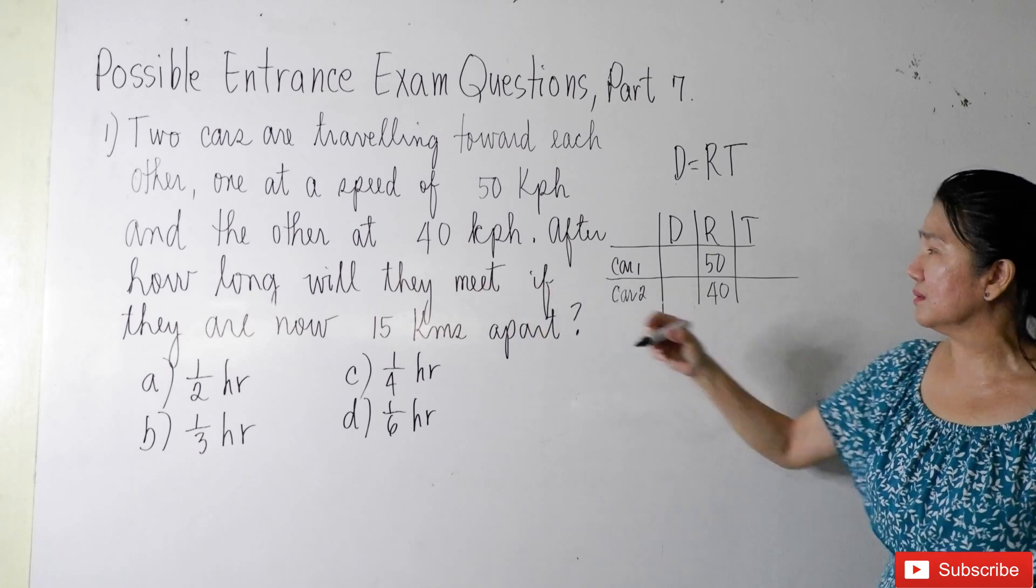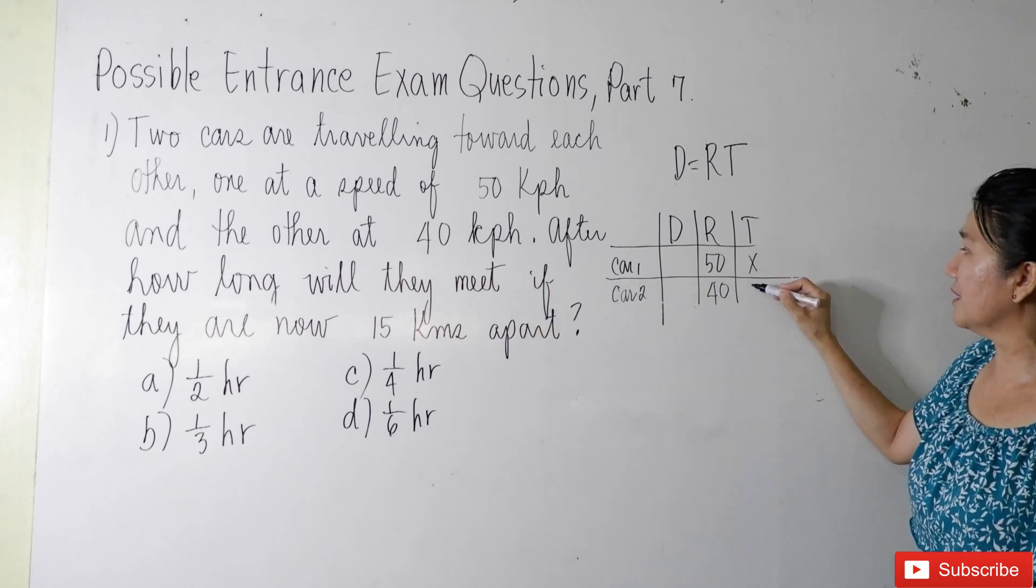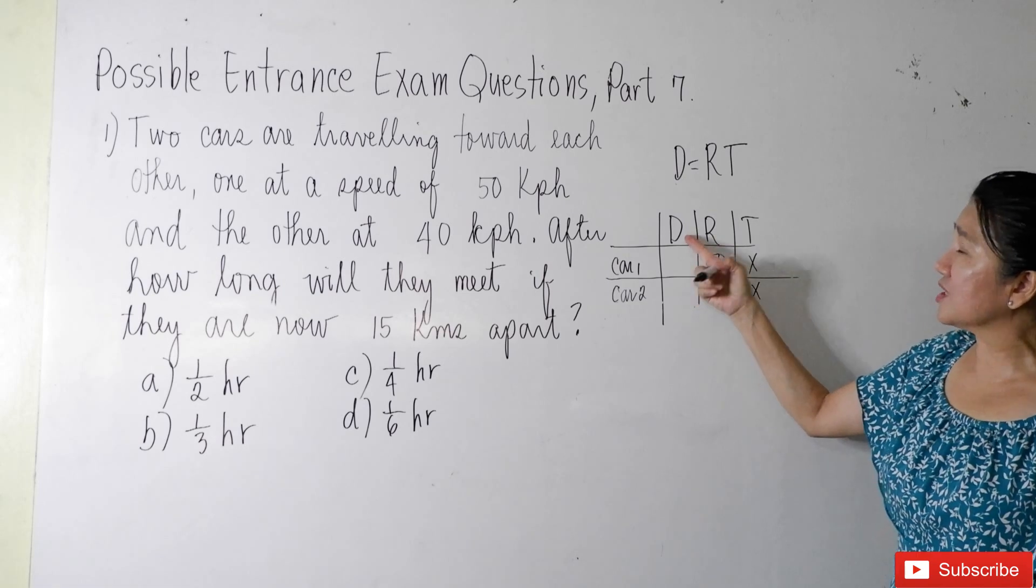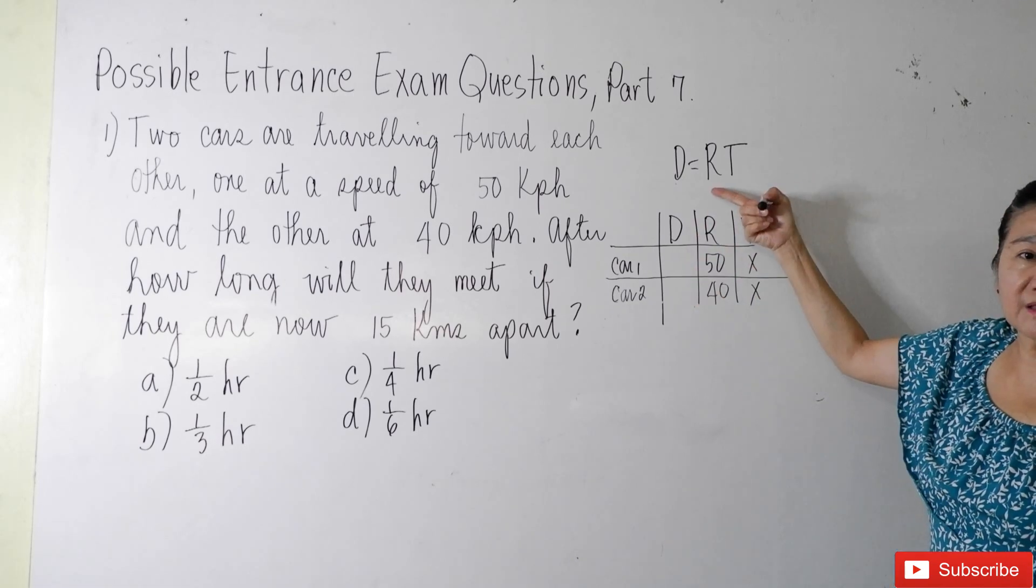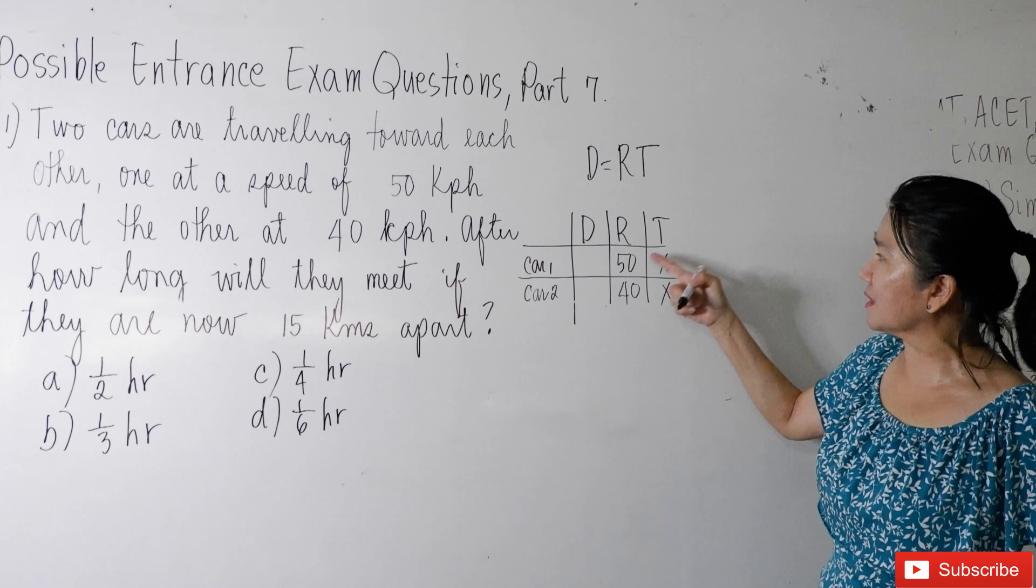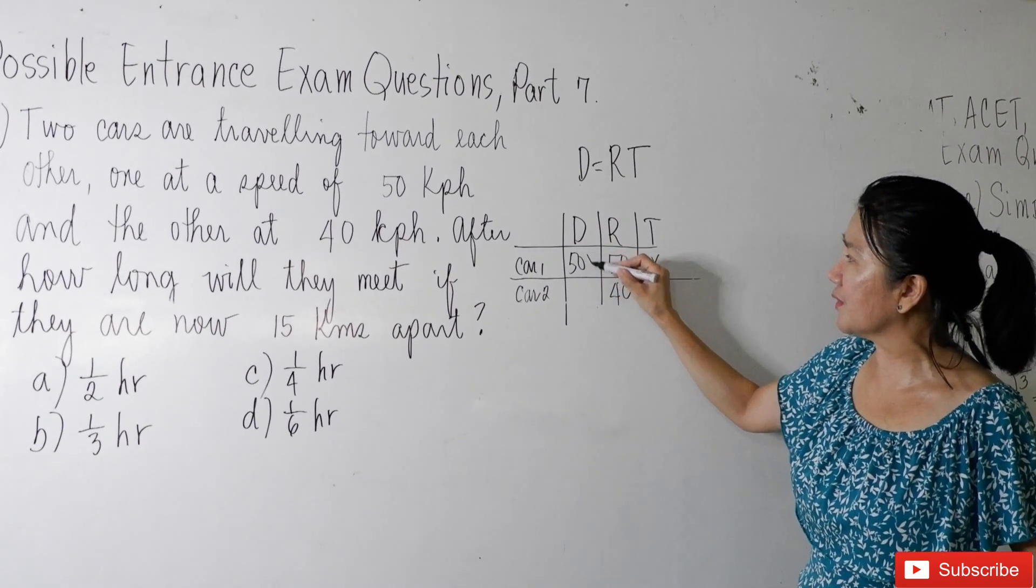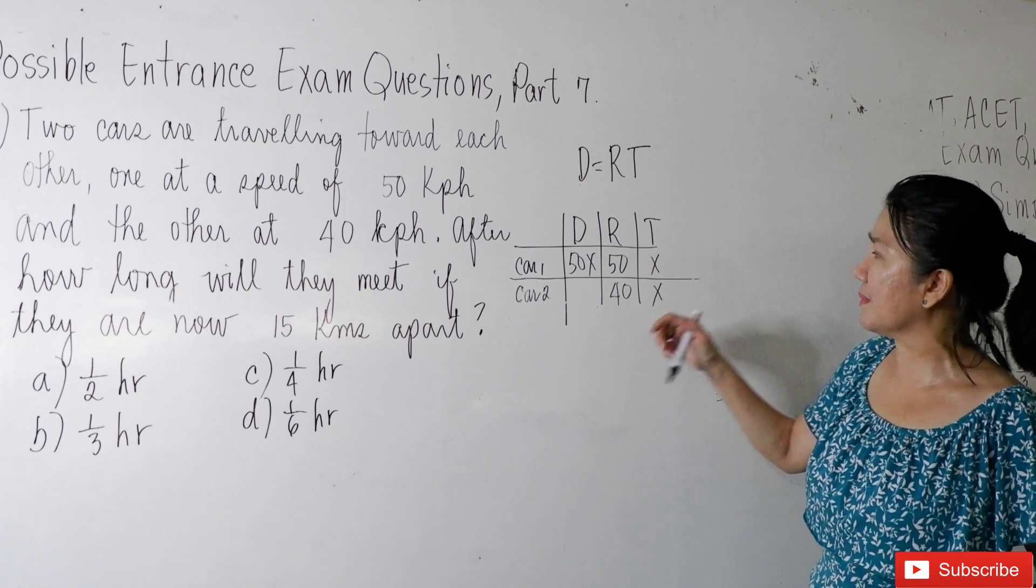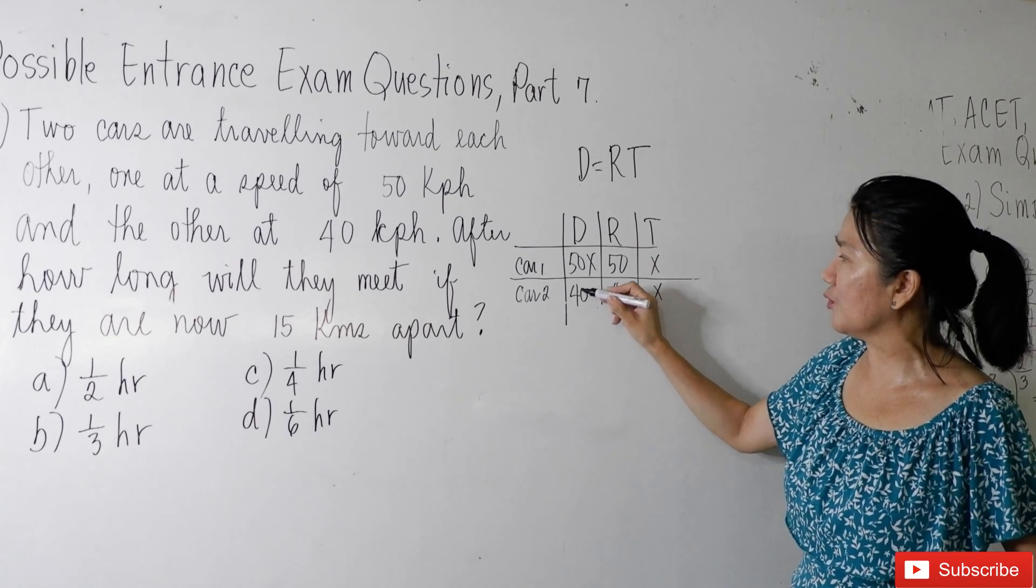After how long? That would mean your time here is x. So, therefore, you get the distance by applying rate times time. Rate 50 times time x, so the distance here is 50x. Rate is 40 times time x, so the distance is 40x.